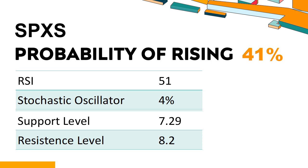The current stochastic oscillator of SPXS is 4%. When the indicator falls below the 20 level, it is usually considered oversold, indicating that a price rebound or recovery is likely for the stock. An oversold condition occurs when the stock price falls too fast and too much in a short period of time, which may indicate that the selling pressure has exhausted.